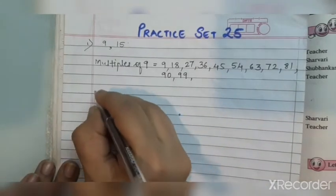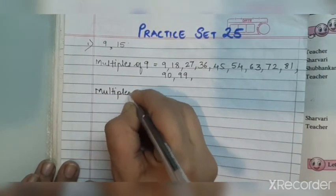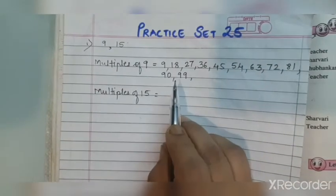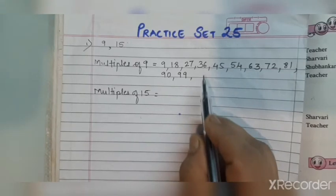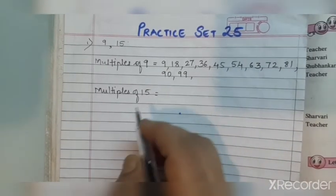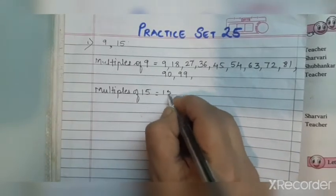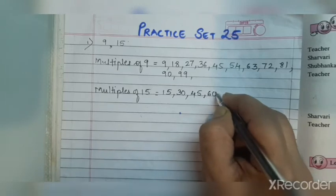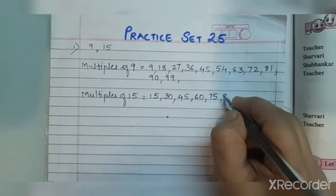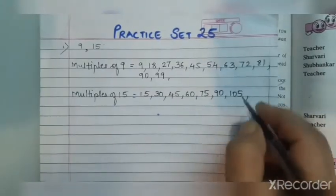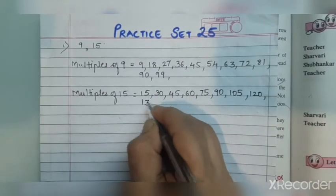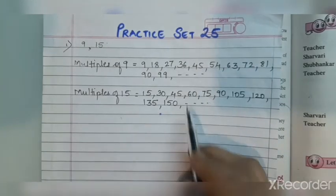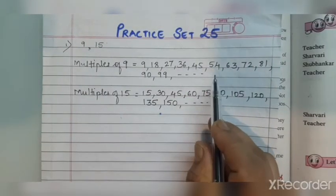Now let's write the multiples of 15 to see whether we need more. We just want the common and least common one, so we'll write about 10 or 11 and see if we find a common multiple. Multiples of 15: 15, 30, 45, 60, 75, 90, 105, 120, 135, 150, and so on. We don't need to write further.